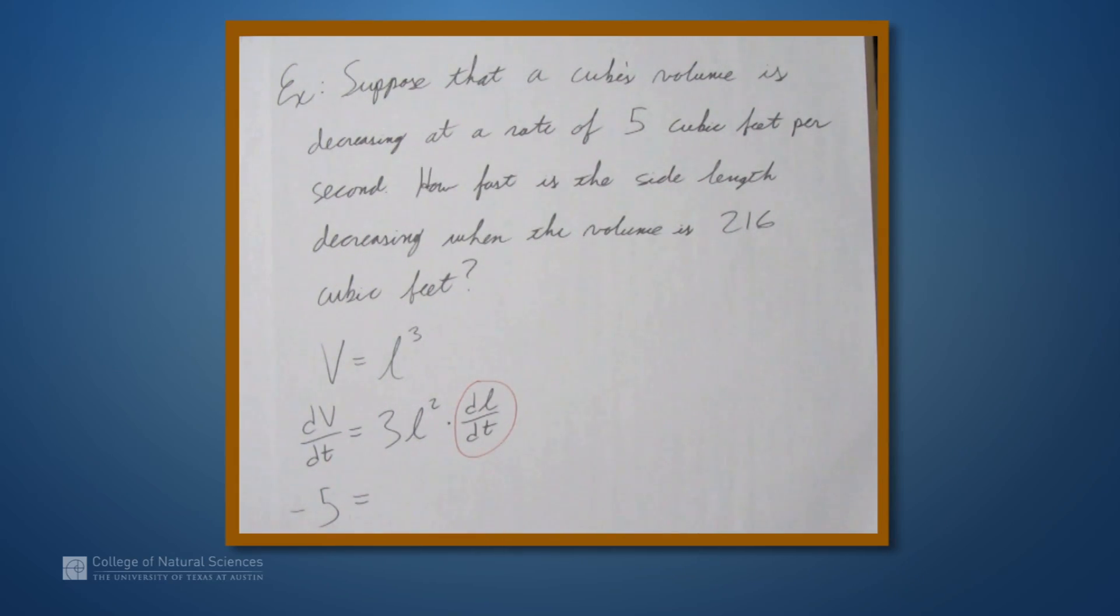And this equals what? Well, we're going to need to know what l is. This dl/dt is what we want. How do we find l? We're told that the volume is 216 cubic feet. So, this means that the side length is 6 feet. Because 6 cubed is 216.